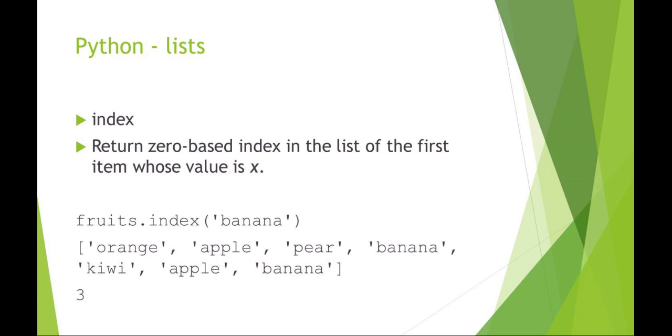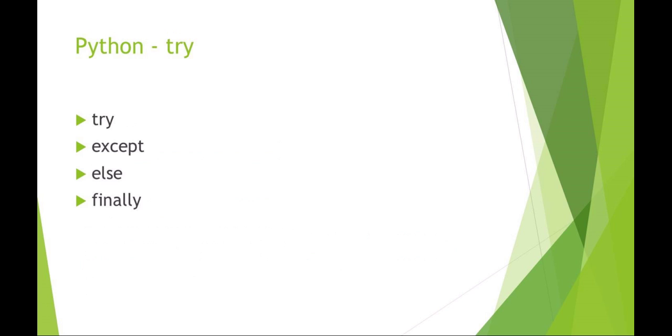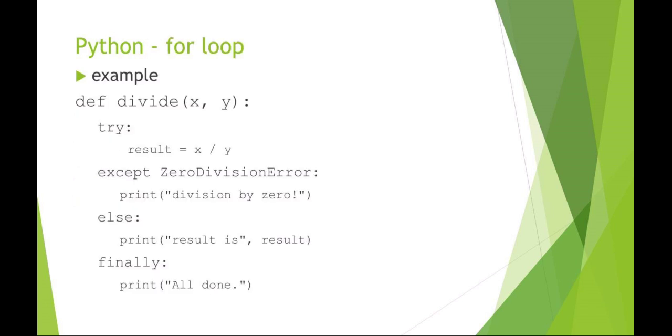Another thing I want to talk about in Python is this idea of try and except and else and finally. This is a really interesting syntax with Python. Basically, this is a nice way of doing some debugging if you want. What you can do is try to do something and if you get an exception do something else. Let's look at an example. I'm defining a new item I'm calling it just divide, dividing x by y.